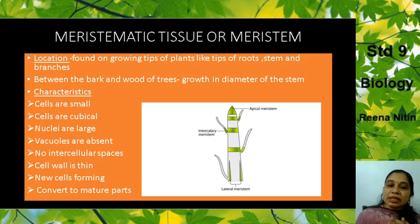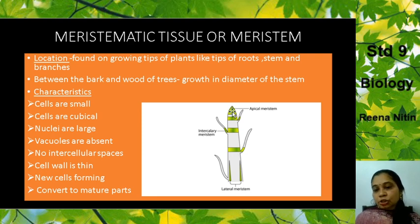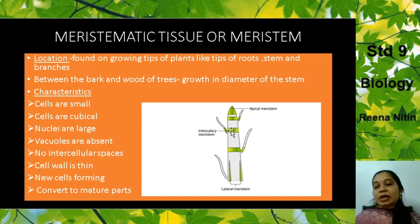Now we study the first type — meristematic tissue. Where are they present? See, at the tips — this is the growing tip of the plant, the shoot part. It is known as the apical meristem because it is at the apex of the plant. They can also be found at the sides, known as lateral meristem, or they are in between, known as intercalary meristem.